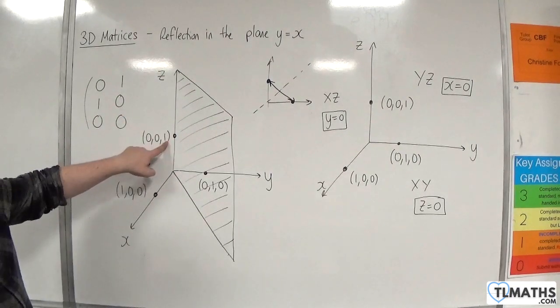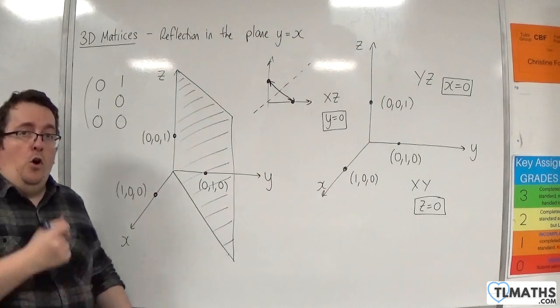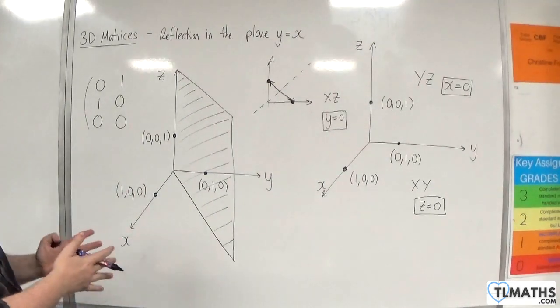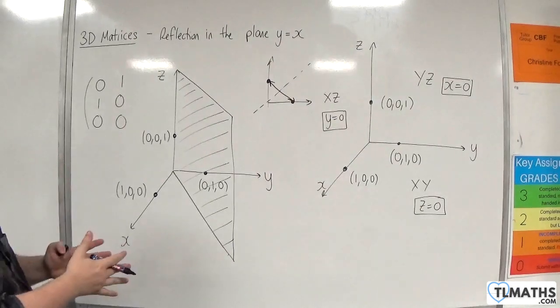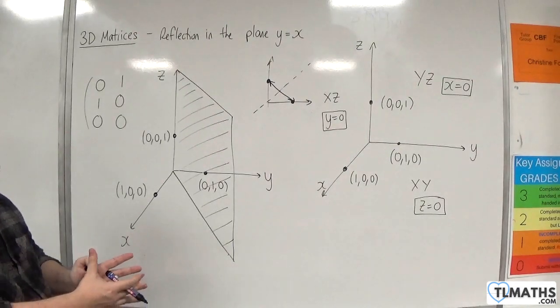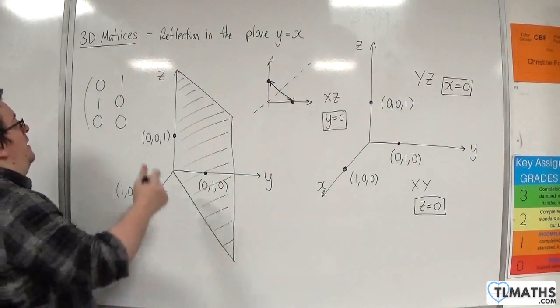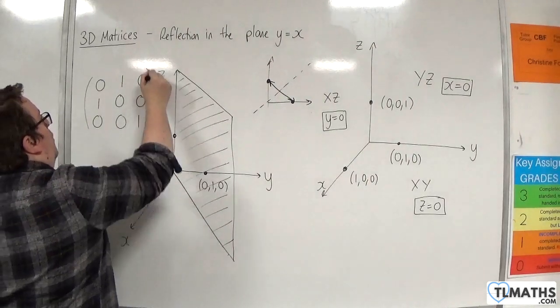Whereas (0,0,1), with it being on the plane y equals x, because it's on the plane it's on the mirror essentially, and so will remain where it is. And so we'll have (0,0,1).